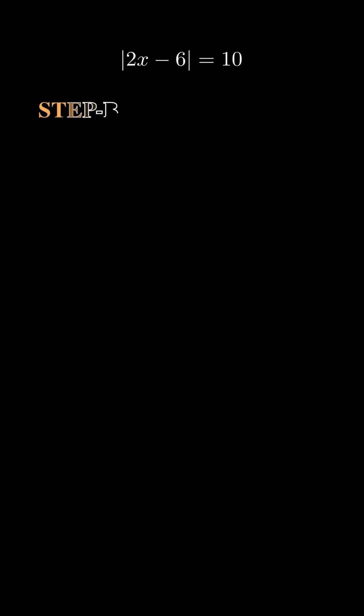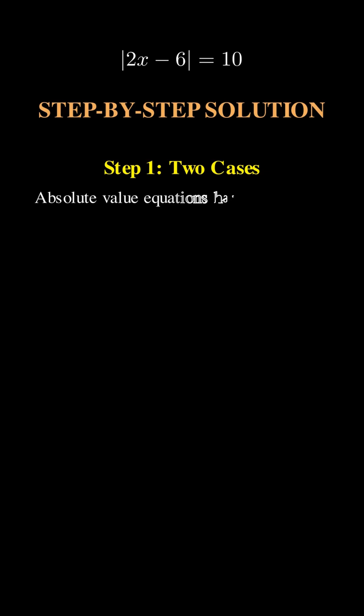Now back to our equation. The absolute value of 2x minus 6 equals 10. Here's the secret that most students miss. Absolute value equations have two solutions. Why? Because two different numbers can have the same distance from zero.